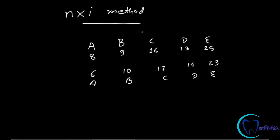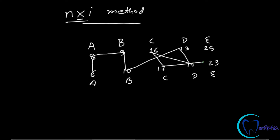Another way of memorizing the eruption sequence is called the NXI method. Writing the teeth in the Palmer system for maxillary and mandibular, and taking the range of eruptions for each tooth, a pattern emerges called NXI. First there is eruption of mandibular central incisors followed by maxillary central incisors, forming an N pattern. Then lateral incisors — maxilla followed by mandible — continuing the N. Then maxillary first molar followed by mandibular first molar, then maxillary canine and mandibular canine, forming an X-like pattern.